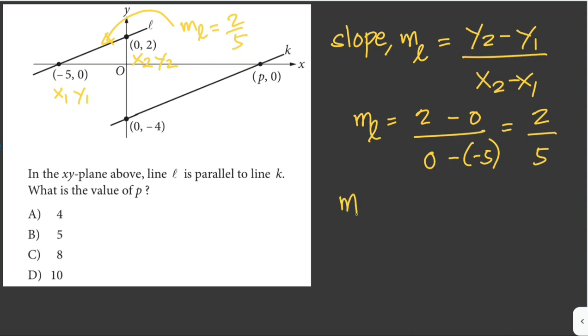So the slope of line L is just equal to 2 over 5. Since the slope of line L is just equal to the slope of line K which is 2 over 5, and now we can find P, the coordinate of x which is P from point P, 0.